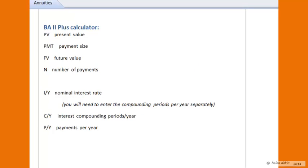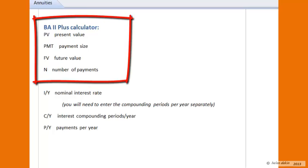You will also note that the BA2 Plus calculator has several functions that will help you in solving for any annuity problem. Some of the functions include PV for present value, PMT for payment size, FV for future value, and N for number of payments.